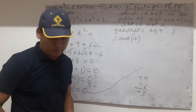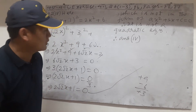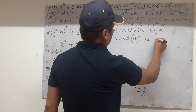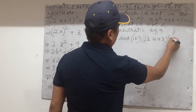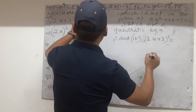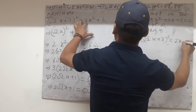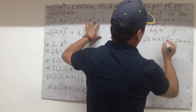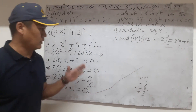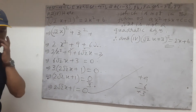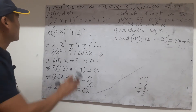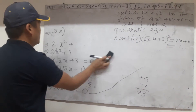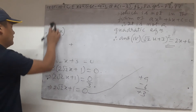Therefore option 4 is not a quadratic equation — it is the correct answer for A2. The question asks which one is not quadratic, and that is option 4: (√2·x plus 3) whole squared equals 2x squared plus 6, which turns out not to be a quadratic equation. One more question — the last one, A3.